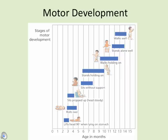The stages of motor development begin with lifting the head, then rolling over, sitting propped up with head steady, sitting without support, standing holding on, walking holding on, standing alone, and finally walking well. This maturation of muscles means that around age 15 months, most children should be walking well.